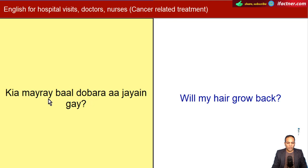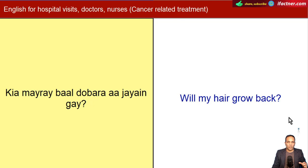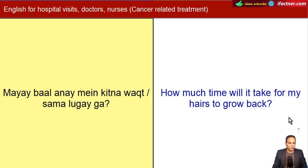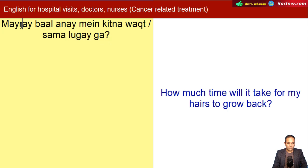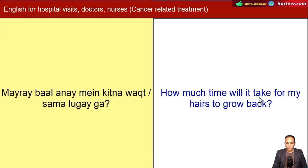Kya mere baal dobara aa jayenge? Will my hair grow back? Kuch chemo ki doses aisi hoti hain jin ki wajah se patient ke baal gir jaate hain, lekin normally they dobara aa jaate hain, kuch mahine mein hi. Mere baal aane mein kitna waqt lagega? How much time will it take for my hair to grow back?